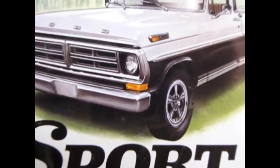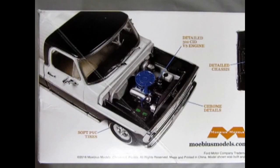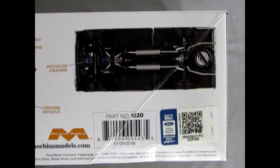And now we wind the clock all the way back to 1972 as we check out our Ford Sport Custom pickup truck by Mobius Models. This model kit came out in 2016 by Mobius Models. It features soft PVC tires, detailed 302 cubic inch V8 engine, chrome details, and a detailed chassis.